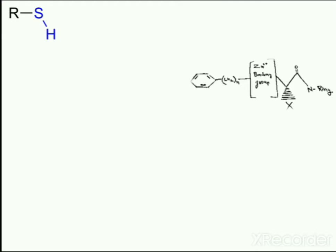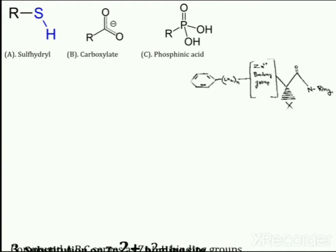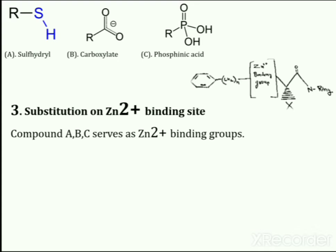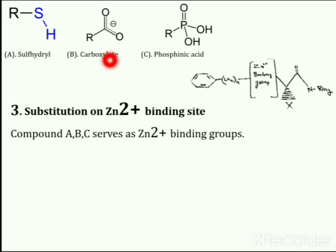Next is substitution on the zinc binding site of ACE inhibitors. Groups generated from compounds A, B, and C — which are sulfhydryl, carboxylate, and phosphonic group — serve as zinc binding groups. These groups are responsible for the binding of the molecule to angiotensin converting enzyme.